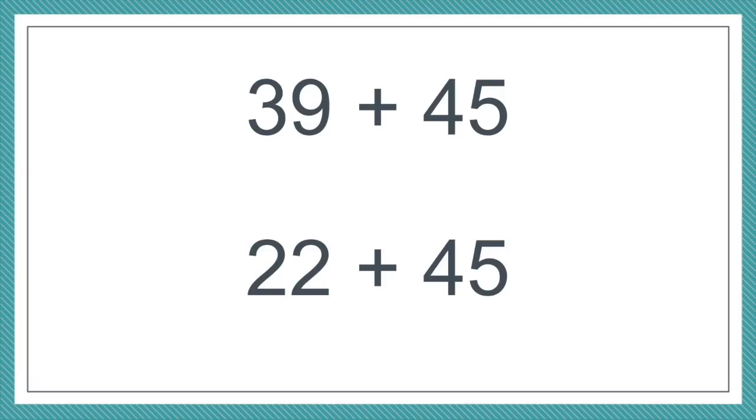Computational sense is when kids look at a problem and use their sense of numbers to know how to do that computation. How I solve 39 plus 45 is actually very different from how I would solve 22 plus 45. Back when I was in school, I solved those completely the same because I was very good at procedures but had no computational sense. Computational sense means kids look at problems and have different ways to think about them — understanding that those problems can be done differently.